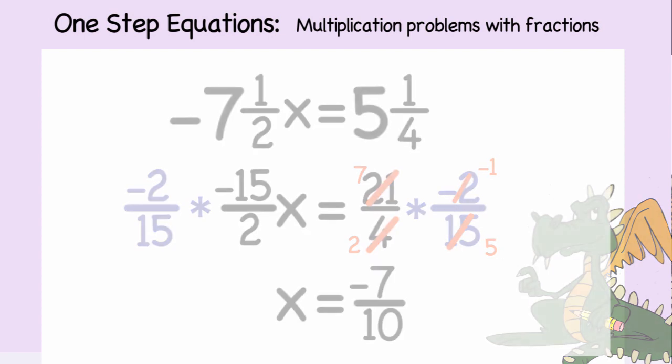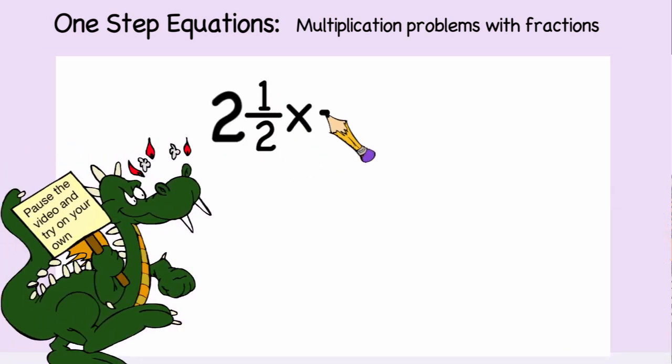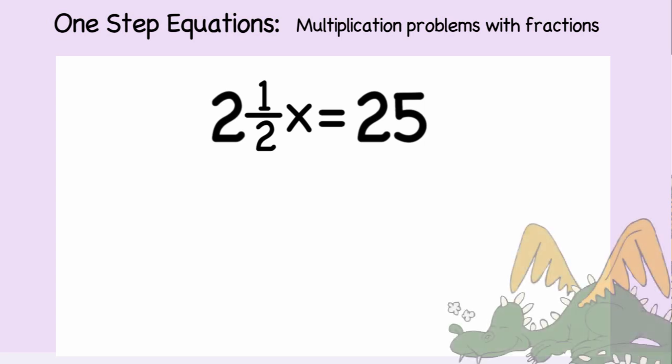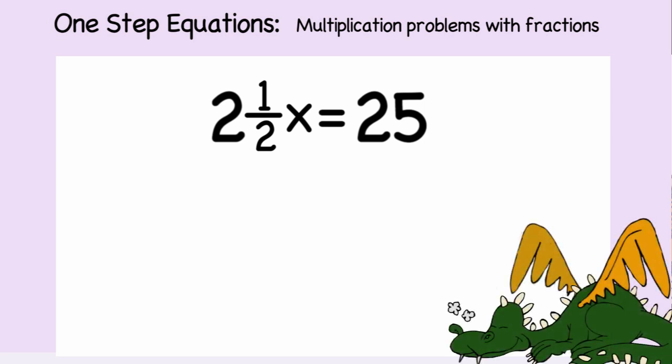So how about if you try the problem two and one-half x is equal to 25? The first thing we need to do is to write two and one-half as a fraction. That would give us five-halves. And we're going to change 25 to 25 over 1. Now we have five-halves x is equal to 25 over 1.